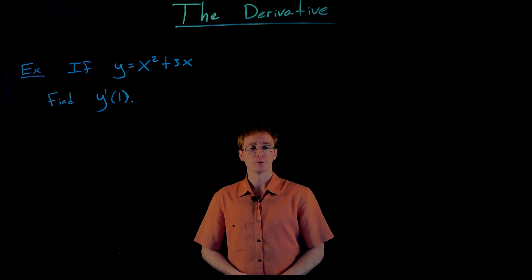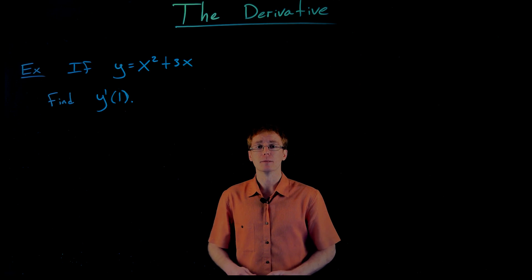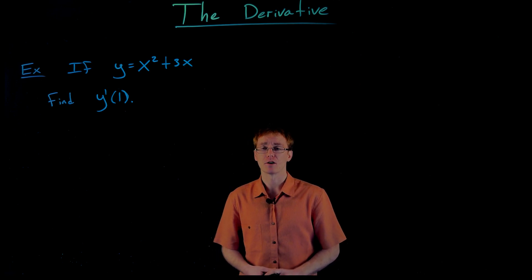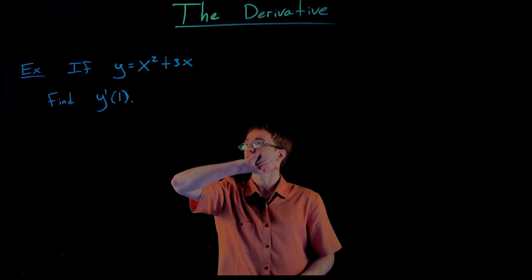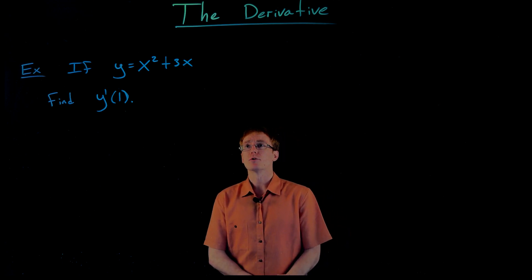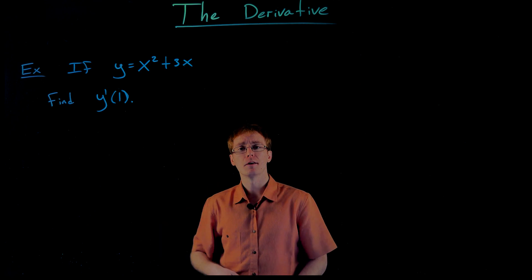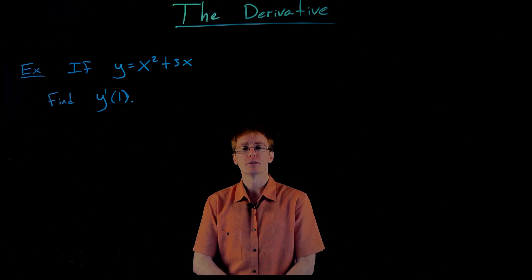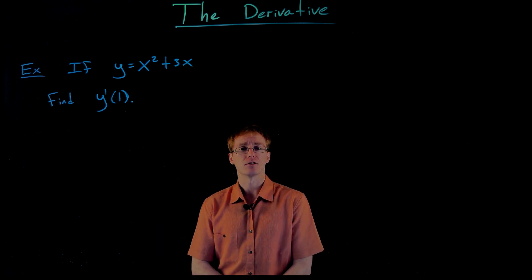Hey everyone. In this video we're going to do an example of finding the derivative of a function using the limit definition that we talked about in our previous video. Here's our example: if our function is given by y equals x squared plus 3x, we want to find y prime of 1 — that is, the derivative of this function at x equals 1.